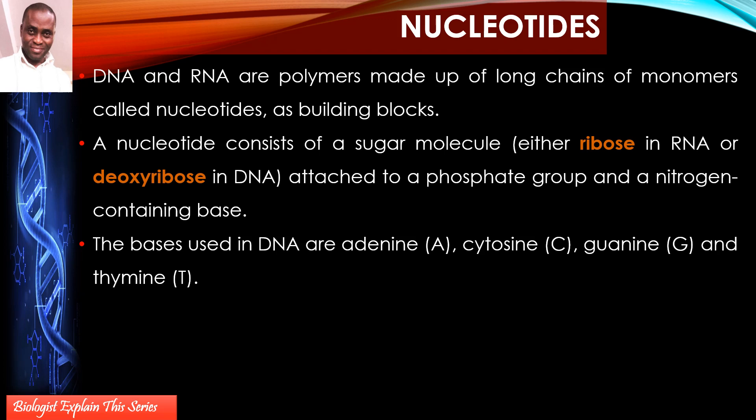One pentose sugar is called ribose, which is the sugar in RNA. The other is deoxyribose sugar, which is found in DNA. You have a phosphate attached to the sugar, and then the third component is a nitrogen-containing base.